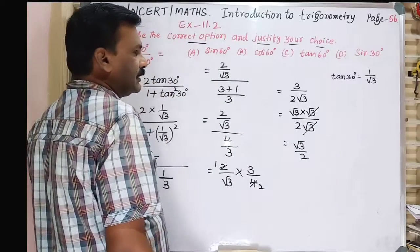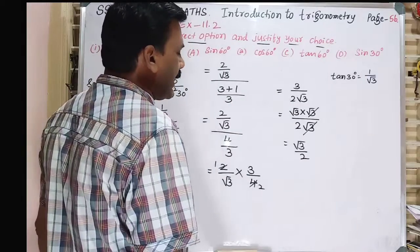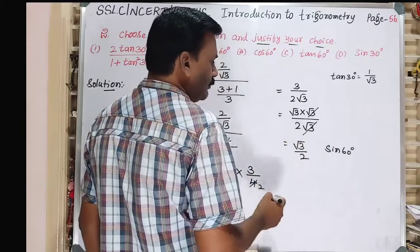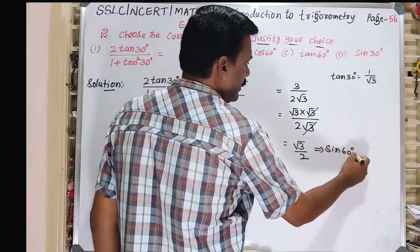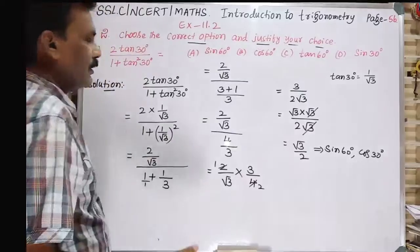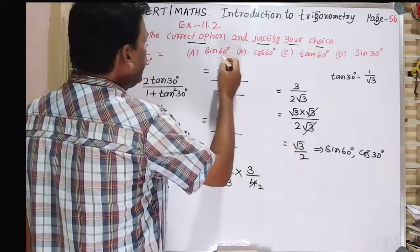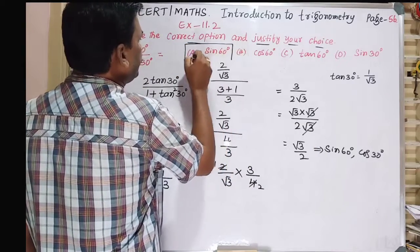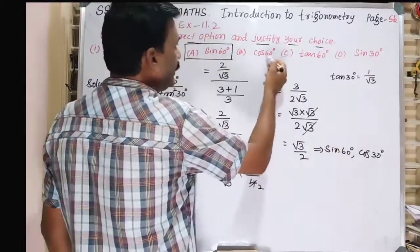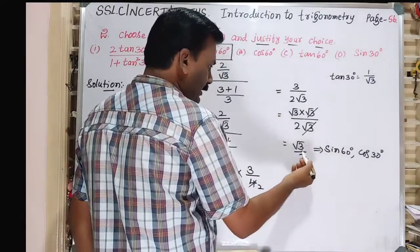This √3/2 is equal to sin60° and cos30°. So √3/2 is equal to sin60°, and so the answer is sin60°.